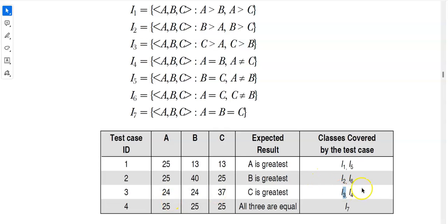Test cases 1 through 3 have covered i1, i2, i3, i4, i5, and i6. The only remaining class is i7, where all three are equal. So for test case 4 we choose a=25, b=25, c=25 — or any equal values between 1 and 50 — to cover i7. This completes all classes.